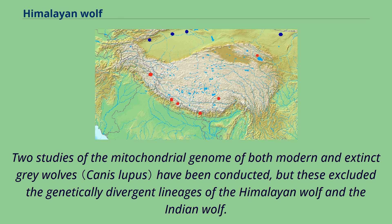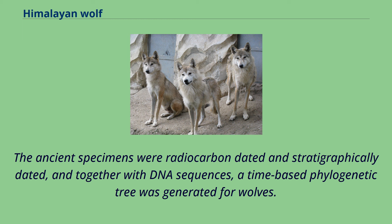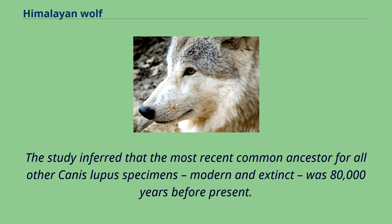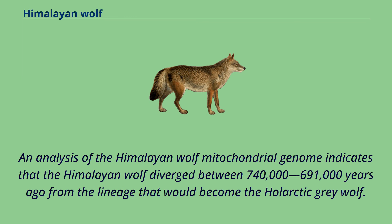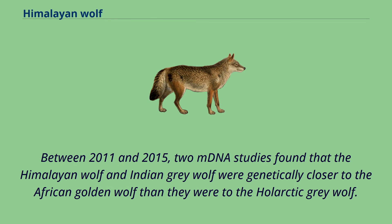The ancient specimens were radiocarbon dated and stratigraphically dated, and together with DNA sequences, a time-based phylogenetic tree was generated for wolves. The study inferred that the most recent common ancestor for all other Canis lupus specimens, modern and extinct, was 80,000 years before present. An analysis of the Himalayan wolf mitochondrial genome indicates that the Himalayan wolf diverged between 740,000 and 691,000 years ago from the lineage that would become the whole arctic gray wolf. Between 2011 and 2015, two mitochondrial studies found that the Himalayan wolf and Indian gray wolf were genetically closer to the African golden wolf than they were to the whole arctic gray wolf.